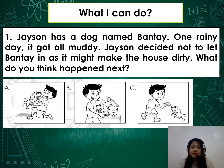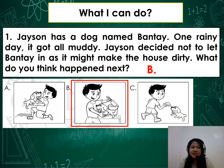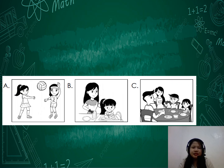Is it A, B, or C? Write your answer in your notebook. The correct answer is letter B — of course, you will bathe the pet because it is dirty and muddy. Did you get it correctly? Very good!